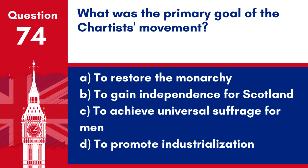Question 74. What was the primary goal of the Chartists' movement? a. To restore the monarchy. b. To gain independence for Scotland. c. To achieve universal suffrage for men. d. To promote industrialisation.